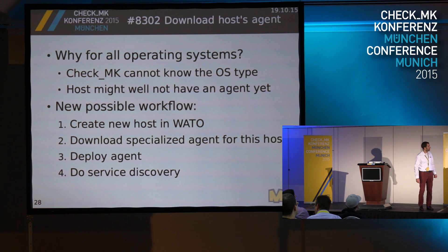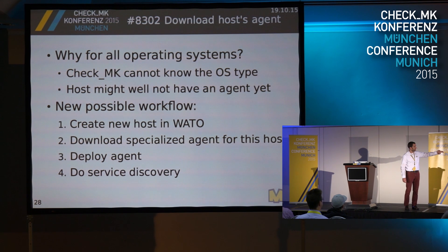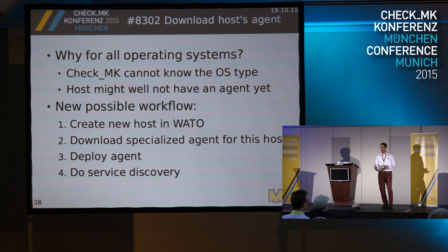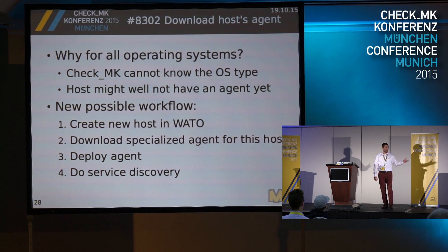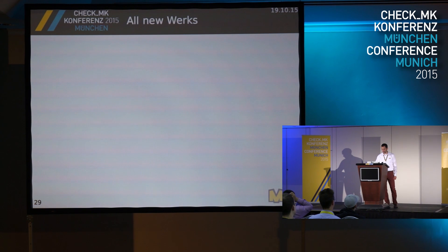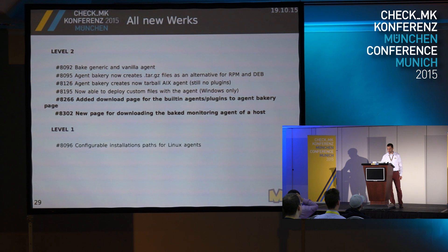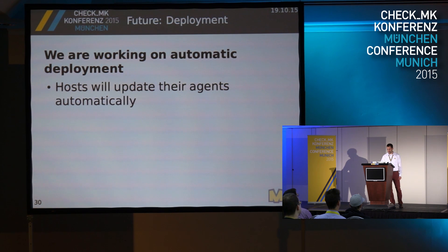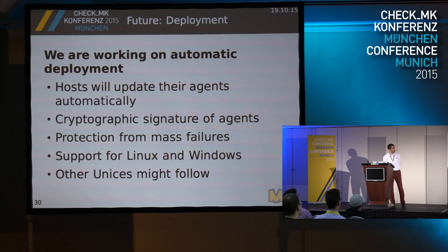Here you can see how this could work with a specific agent — you have the host, you download the agent you want, install it, and do the service discovery afterwards. If you say all Linux Oracle hosts have certain plugins and you have a new host in that specific area, you get the right agent with the configuration you need. There's also a little overview of additional work done for these agents — it's all documented in the slides so you can download it.